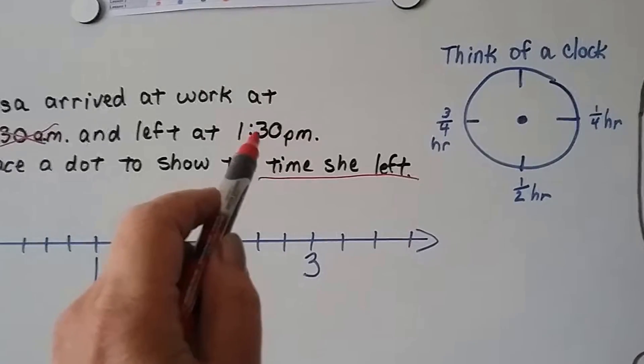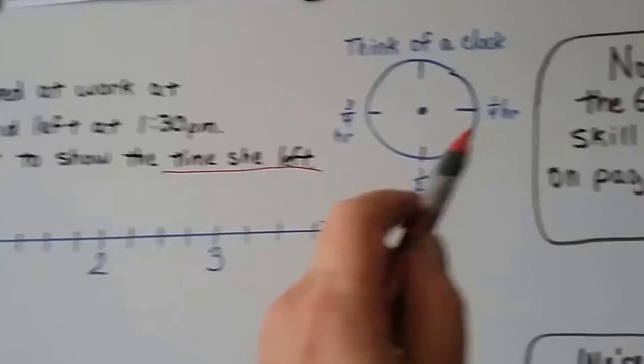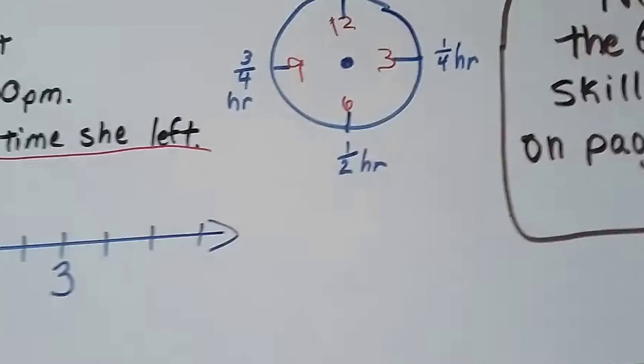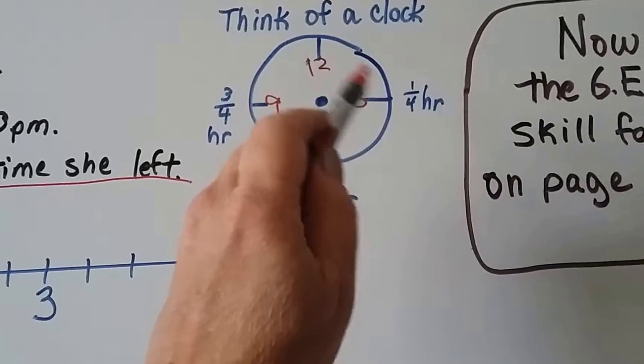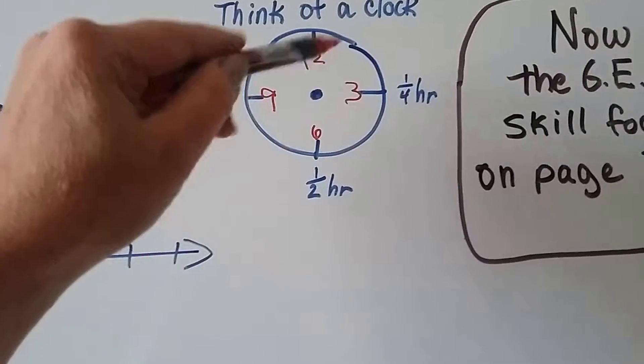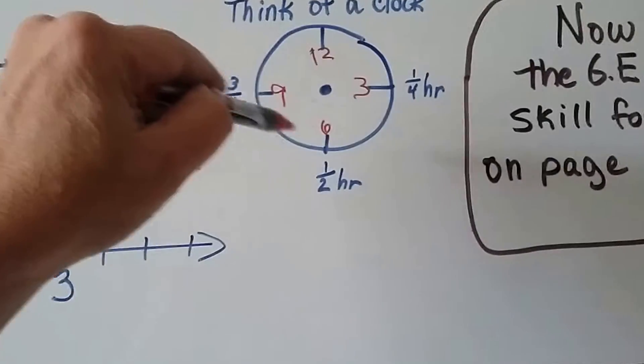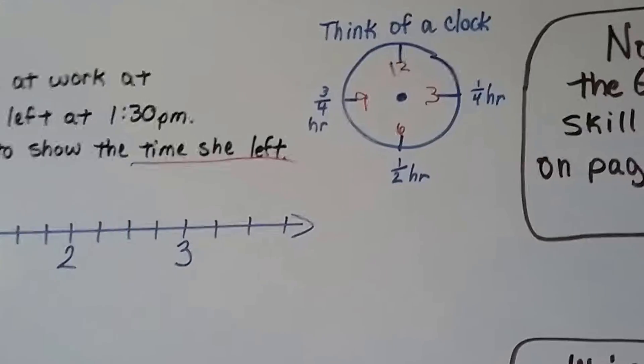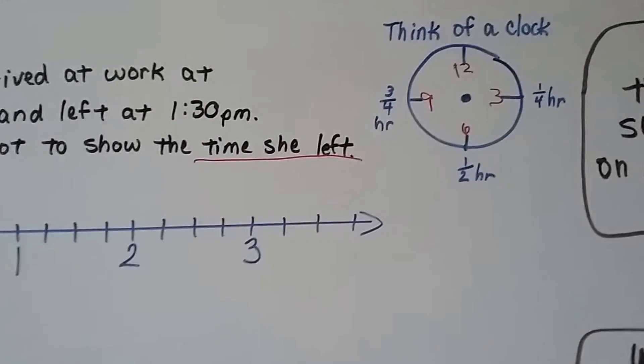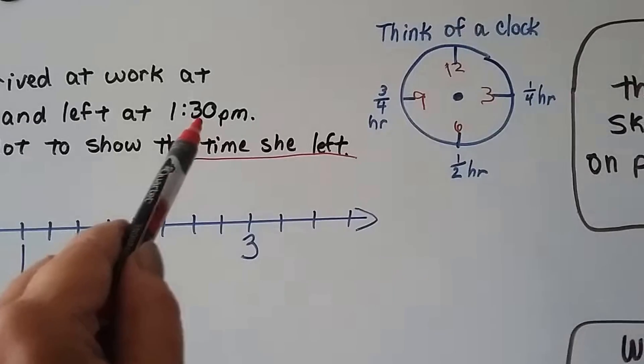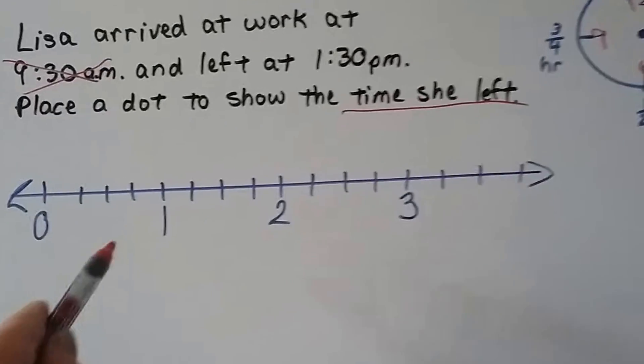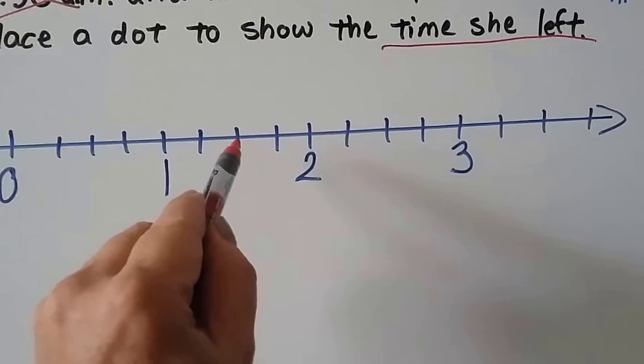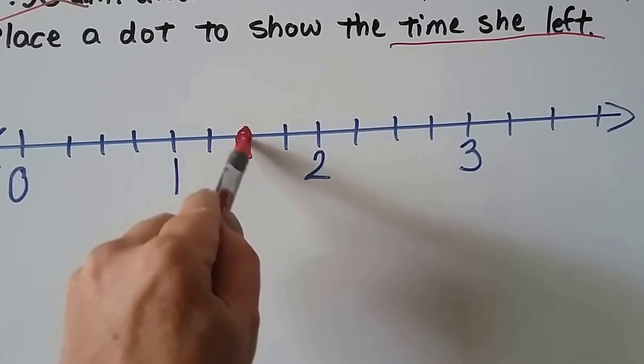Now all we've got is this number line from zero to three. So we think of a clock. If we wanted to show 1:30, this would be the 3 on the clock, this would be the 12, this would be the 3, that would be the 6, that would be the 9. And this area here is a quarter hour, this area here is a half hour, and then this area here is three fourths of an hour. We want to show the time she left. We need to show one and a half, because 30 minutes is half of an hour. So here's the one, here's the two, it would be right in between the one and the two. This right here in the middle is one and a half.